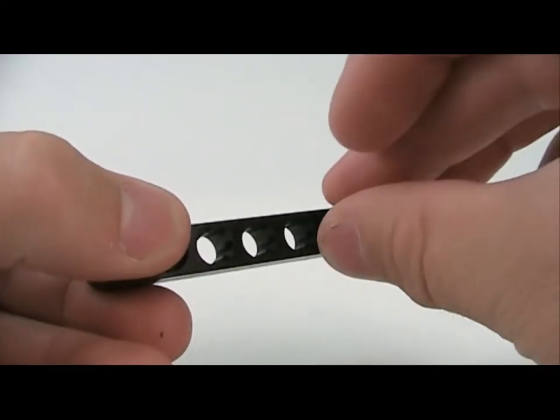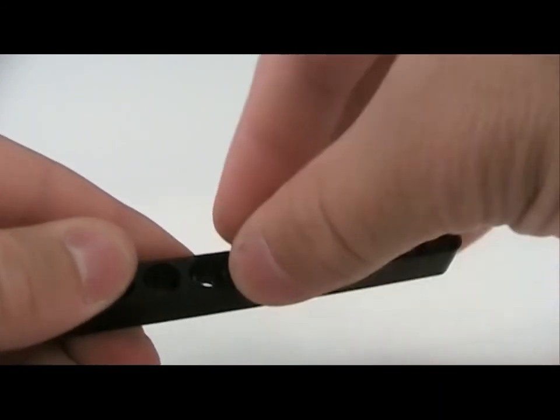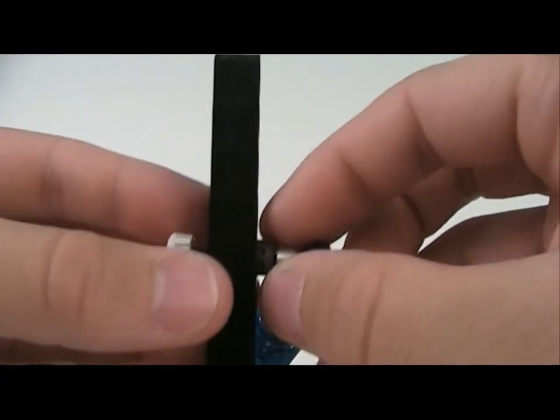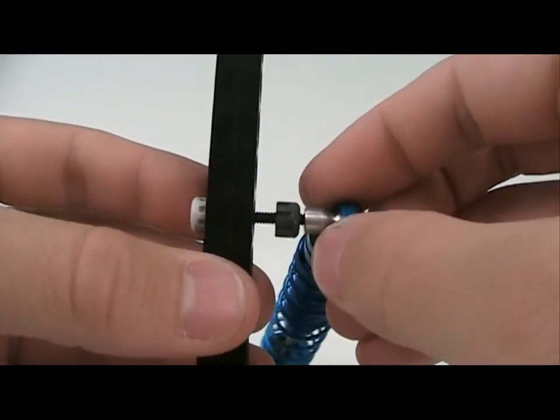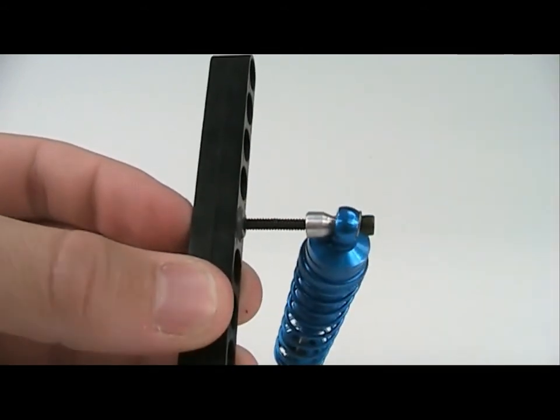To use the screw adapters, slide the adapters into the beam. Put the light gray adapter on the outside, and the darker gray adapter on the inside. Then, thread the screw into the adapters.